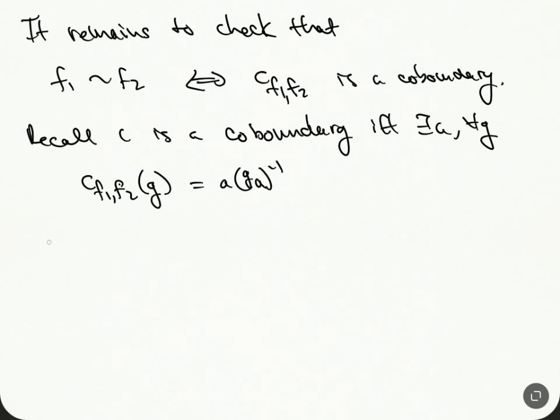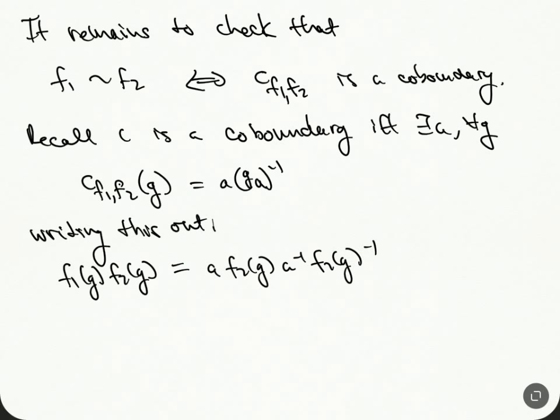And so we just write this out. So F₁(g)·F₂(g)⁻¹ is equal to, well, this is a·F₂(g)·a⁻¹·F₂(g)⁻¹. And this is an inverse here. And so now this implies that F₁(g) is equal to, well, this is equivalent to a·F₂(g)·a⁻¹. And this is what it meant to be equivalence. And this was the definition of equivalence.